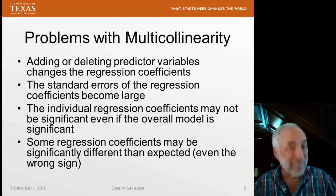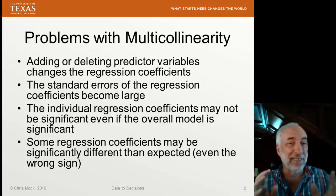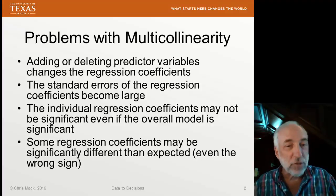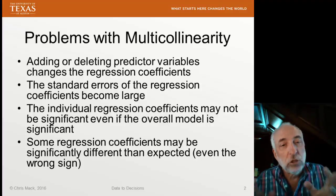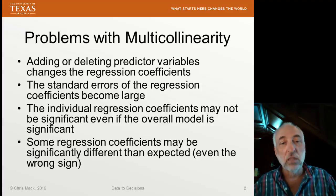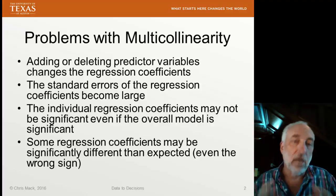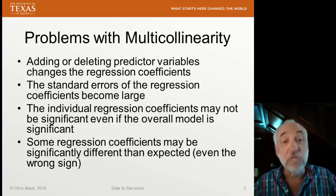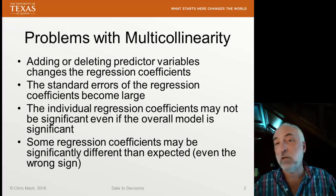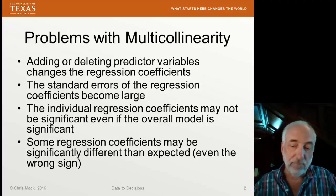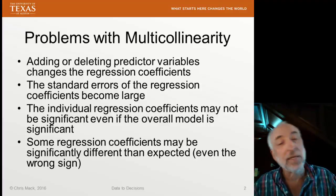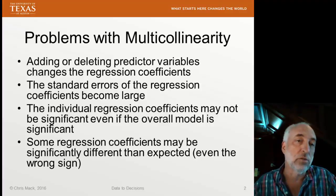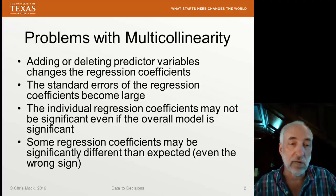That's very much a function of the scope of your model. But if you want to use the model to interpret what's going on — to understand the meaning of your coefficients as having some physical meaning — multicollinearity can destroy all of that. So we often want to detect it, and in future lectures I'll also talk about how to mitigate it, how to address the problem of multicollinearity.